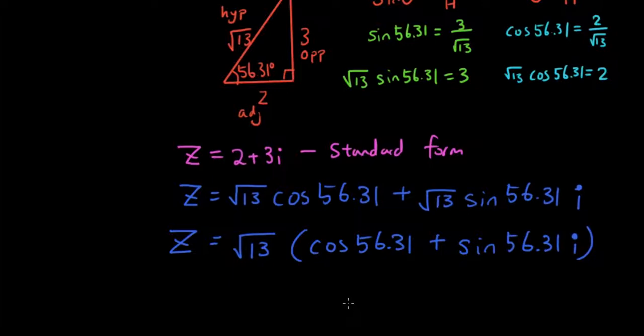The next thing I'm going to do is shorten this even more, because you can see that there is a 56.31 in both of these terms. So the short way of writing this is simply square root of 13 cis 56.31.